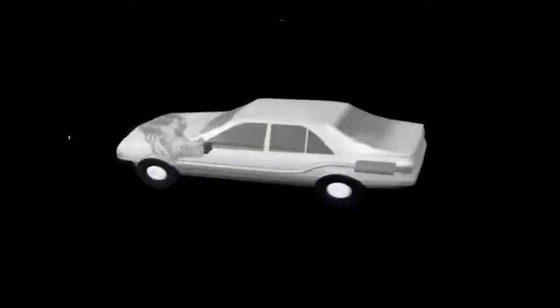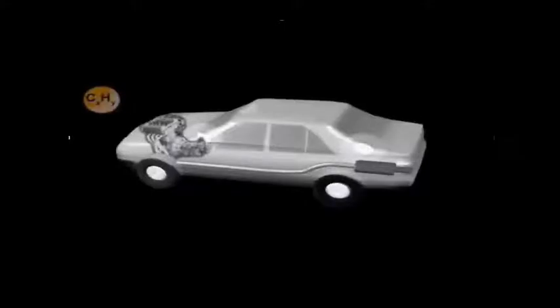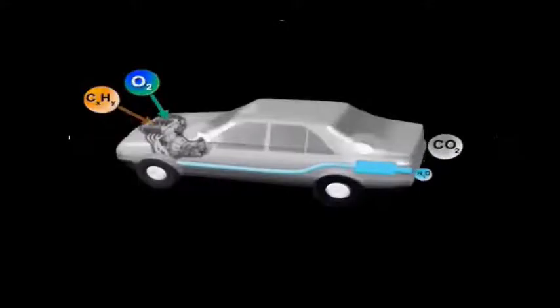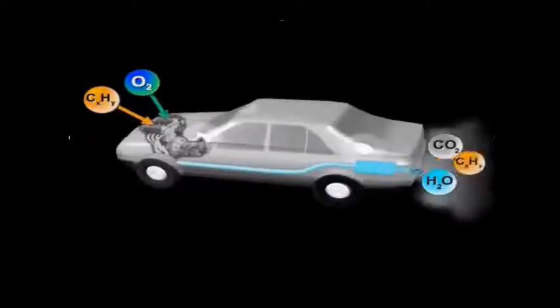The combustion of gasoline in an automobile engine releases energy that powers the automobile. In the combustion reaction, gasoline, which consists of hydrocarbons, reacts with oxygen from the air to produce carbon dioxide and water vapor. However, not all of the hydrocarbons react.